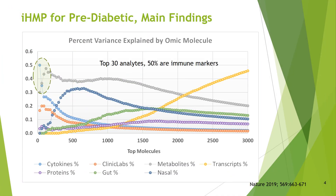Among the many findings obtained with the assessment of the pre-diabetic cohort by the original research group is the fact that, considering the top molecules encountered, differentially expressed between the two groups, among the top 30 such analytes, 50% correspond to immune markers, including cytokines — the motivation for the work presented here.